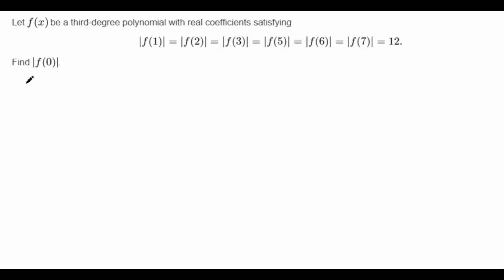Let's first take a look at the problem. Let f(x) be a third-degree polynomial with real coefficients satisfying |f(1)| = |f(2)| = and so on. Notice here that there is no f(4) term, so be careful here or else this will trip you up if you do not read the question carefully.